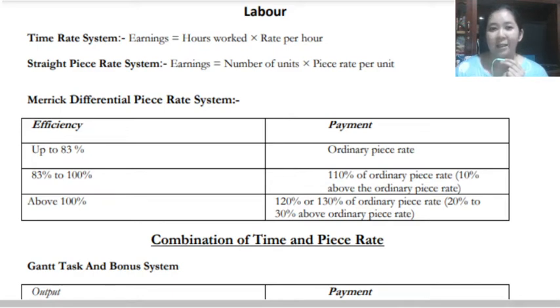The second is the straight piece rate. This is number of units times the piece rate.